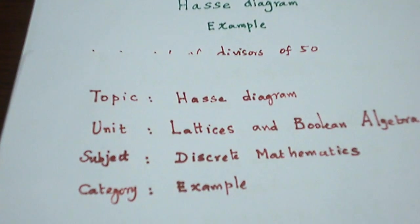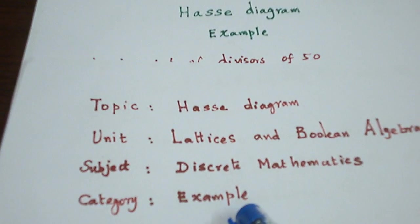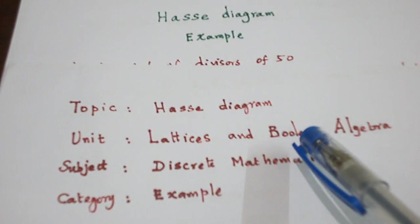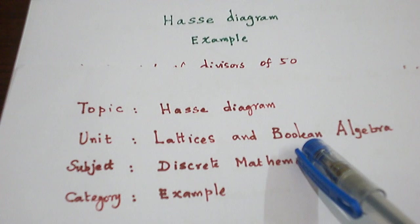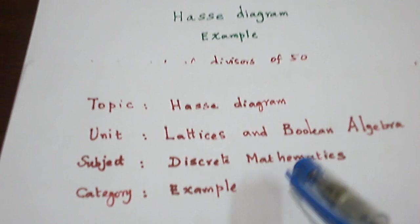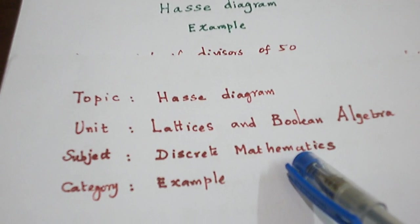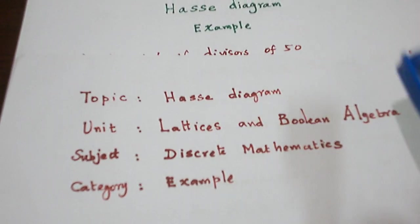Hello students, today let us see an example from the topic Hasse diagram in the unit lattices and boolean algebra that comes in the subject discrete mathematics.